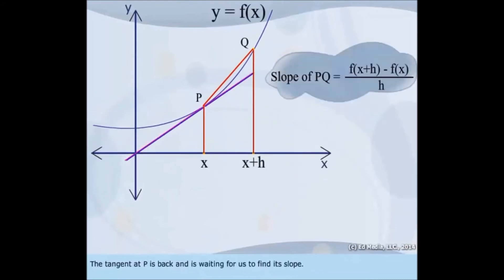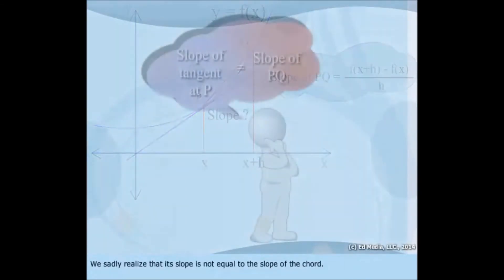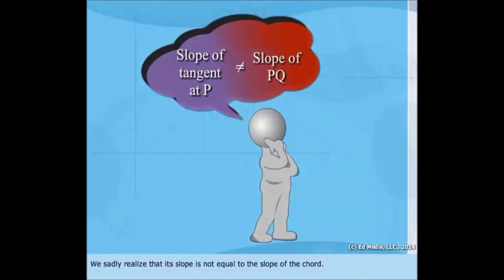The tangent at P is back and is waiting for us to find its slope. We sadly realize that its slope is not equal to the slope of the chord.